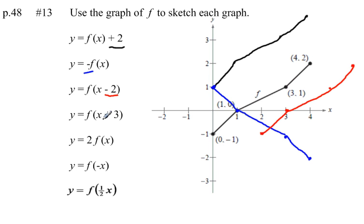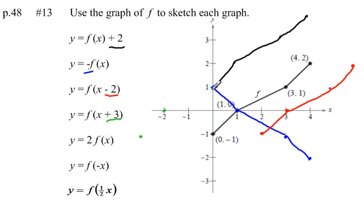Our fourth function, same idea. Now we're graphing f of x plus 3. The one above shifted 2 to the right; this one we're going to shift 3 to the left. Taking every point, we shift them 3 units to the left. Once we get those four points, we connect them and sketch our graph.